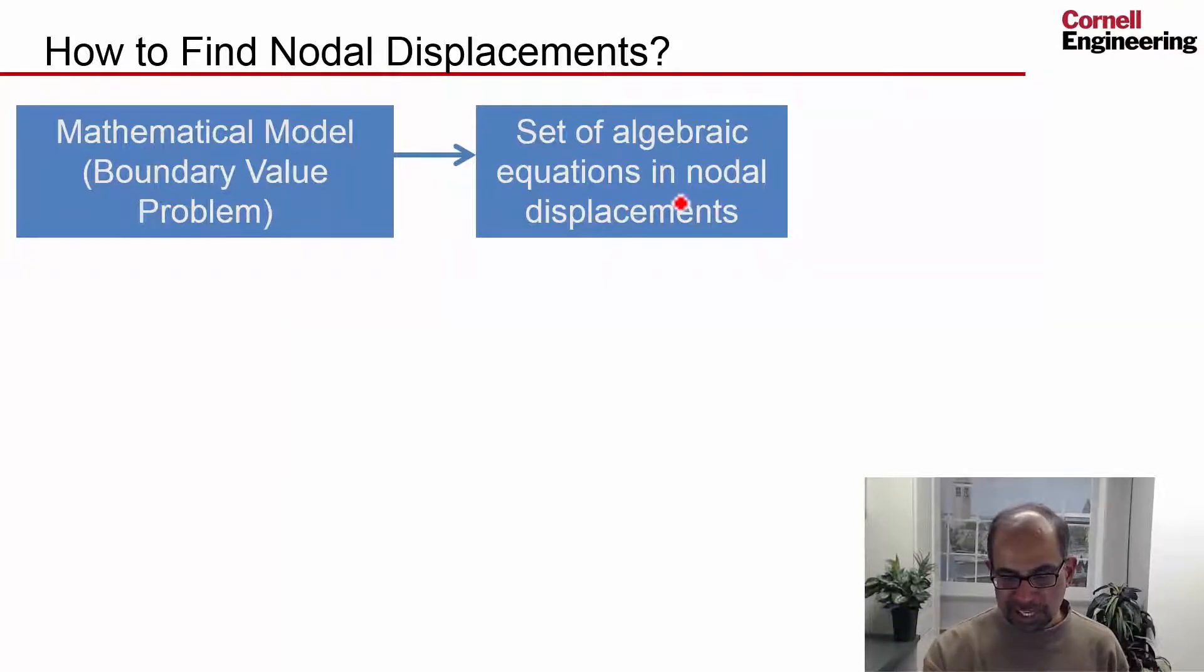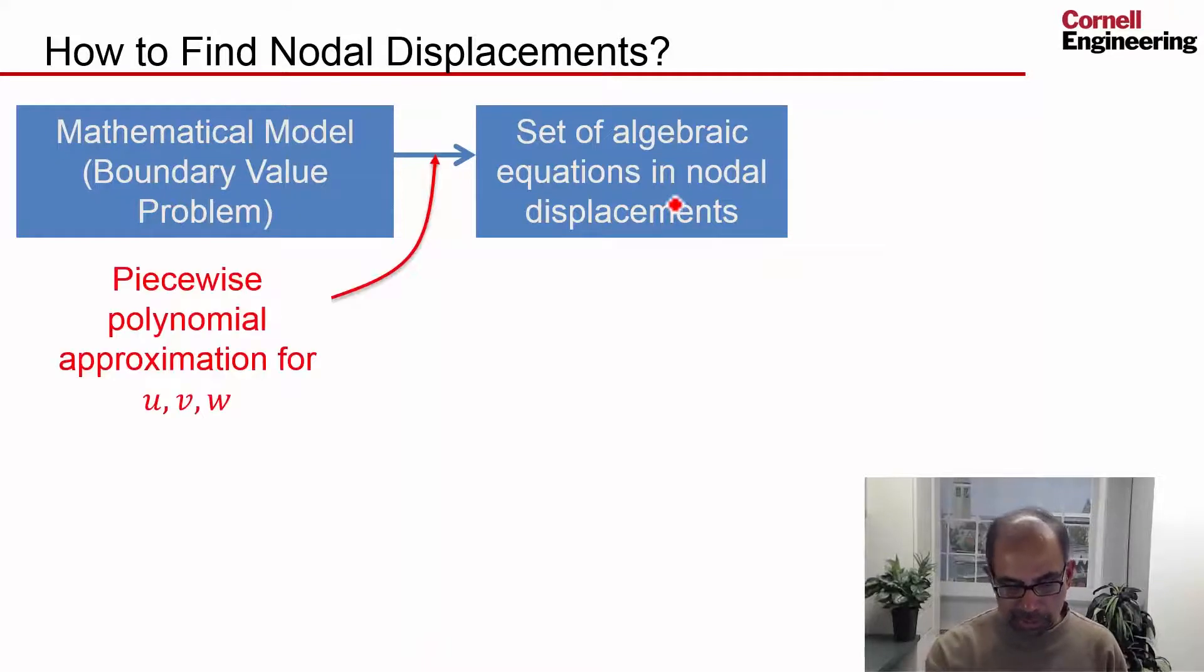This will derive a set of algebraic equations in the nodal displacements using a piecewise polynomial approximation, a polynomial element by element for u, v, w. Previously we had a polynomial interpolation only for temperature. Now you have to have a polynomial interpolation for each of these. Previously in the 2D conduction example we had it in two dimensions. Here you have to do it in three dimensions, so the details keep piling on.